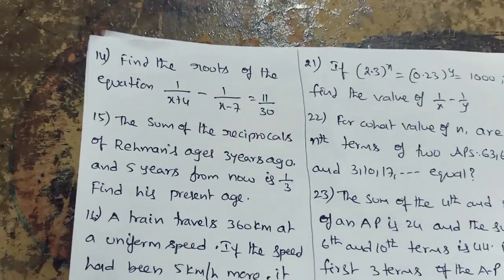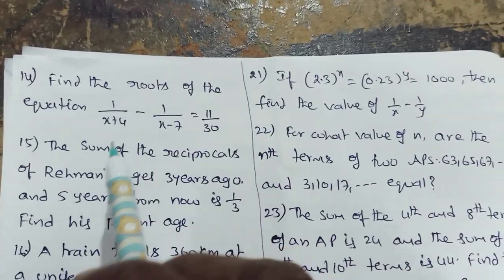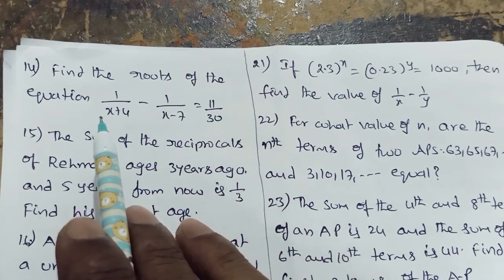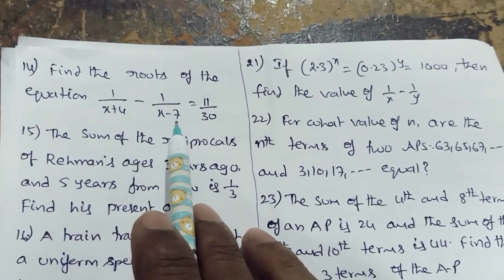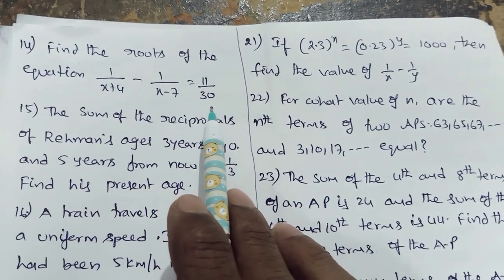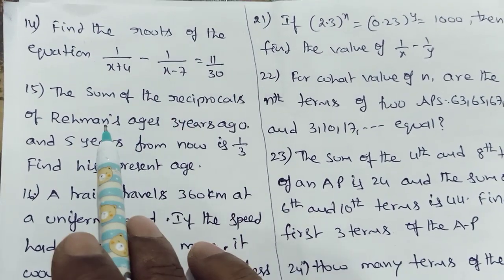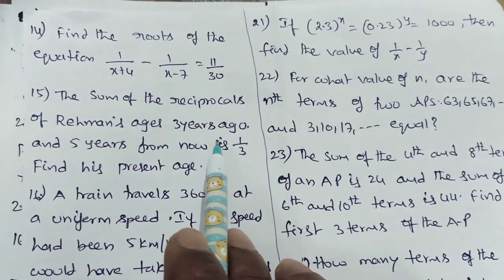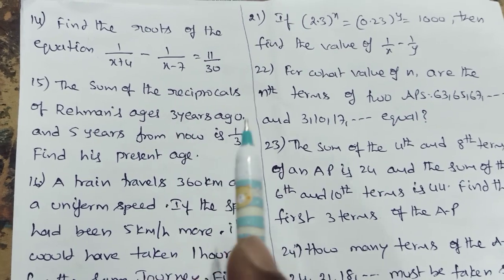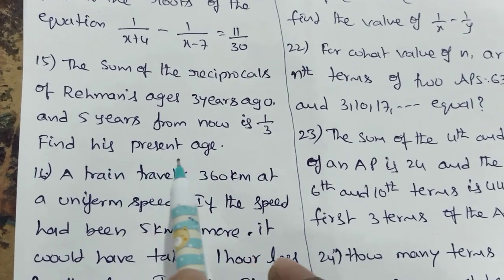Quadratic equations. Find the roots of the equation 1 by X plus 4 minus 1 by X minus 7 is equal to 11 by 30. The sum of the reciprocals of Rehman's age 3 years ago and 5 years from now is 1 by 3. Find his present age.